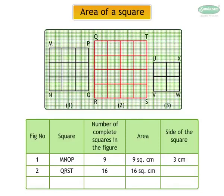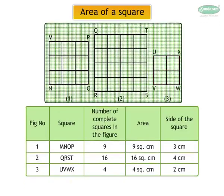The side of square QRST is 4 centimeters. In square UVWX, the number of complete squares are 4. Area is 4 square centimeters. Side of the square is 2 centimeters. From the table, we observe that the area of a square is the product of its side. Area of square is equal to side into side.